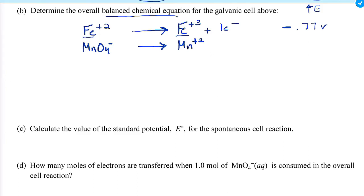Here comes the more complex half-reaction. First, balance all things that aren't oxygens or hydrogens: one Mn on each side — good. Now we have four oxygens on the reactant side. We balance oxygens with water, so I'll write four H₂O molecules on the product side. Each water has one oxygen, so four waters gives four oxygens. That's why we do that — these reactions happen in an aqueous environment.